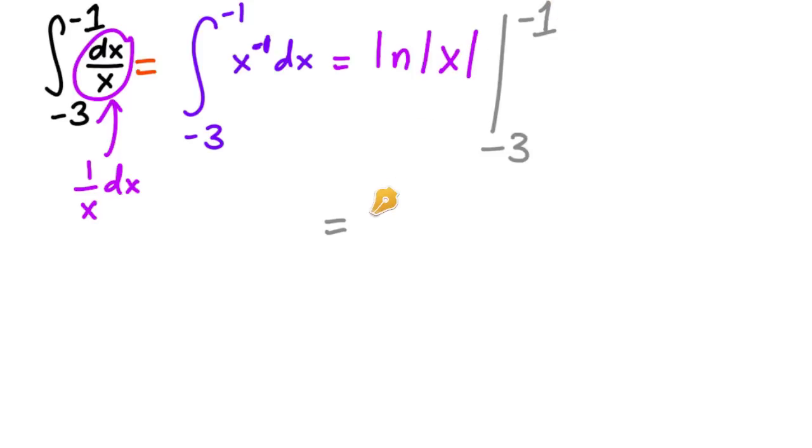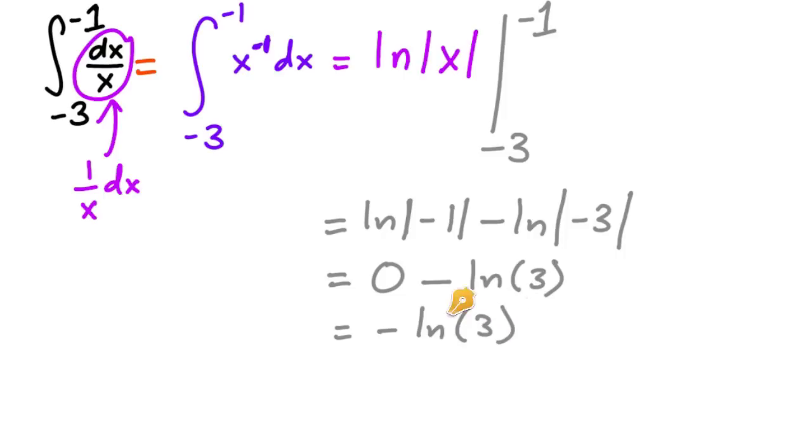So then you have natural log of absolute value of negative 1 minus natural log absolute value of negative 3. And so natural log of, this is just natural log of positive 1, which is 0, minus natural log of positive 3. So we have negative natural log of 3.